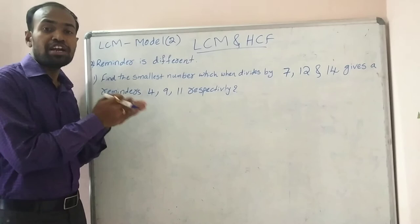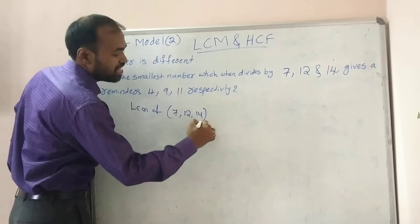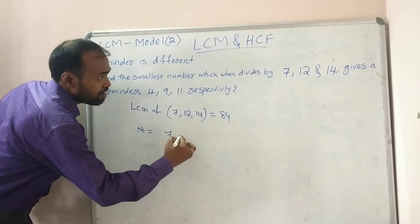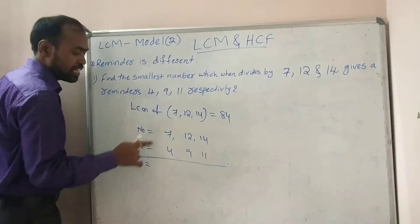For the second model, first find out the LCM of 7, 12, and 14. The LCM is 84. The numbers are 7, 12, and 14, and the remainders are 4, 9, and 11 respectively.